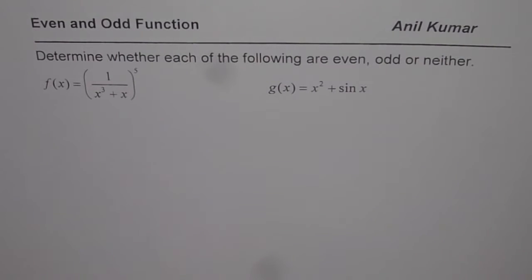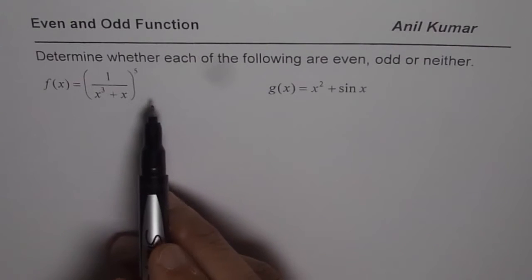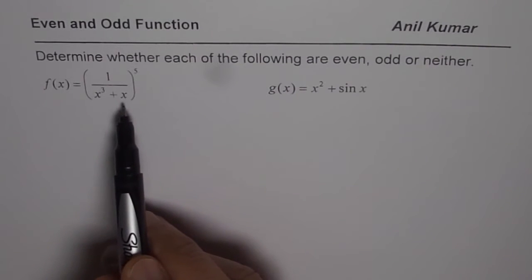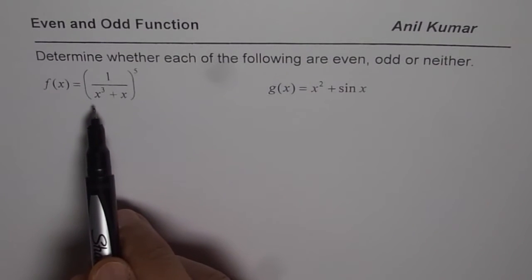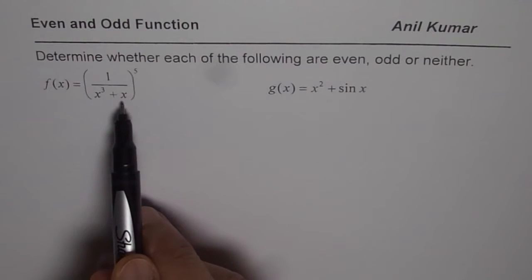You can pause the video and answer the question. Here is my suggestion. When you look at the function, look at each component. In this function, degree is odd. Inside we have x cube which is odd, x is also odd. So we have a combination of odd functions.